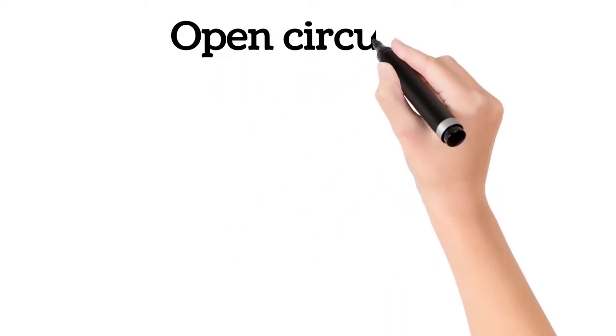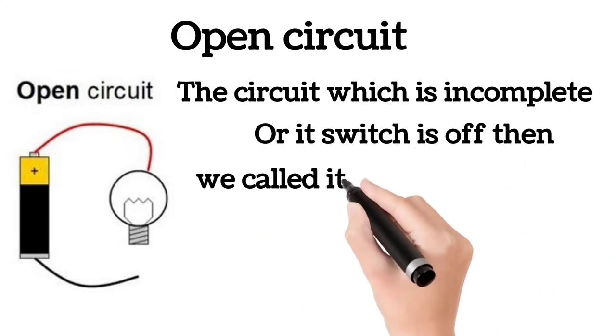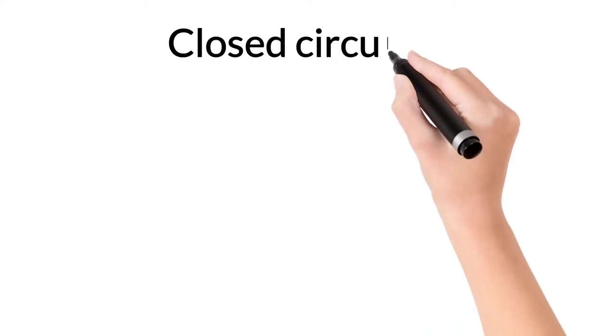First, we will talk about the open circuit. The circuit which is incomplete or its switch is off, then no current flows through the circuit, and it is called an open circuit. The second type of electric circuit is a closed circuit.